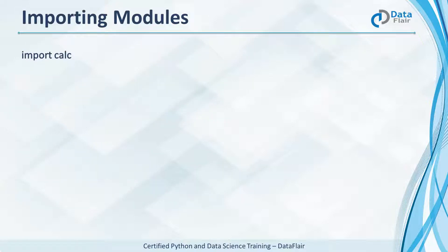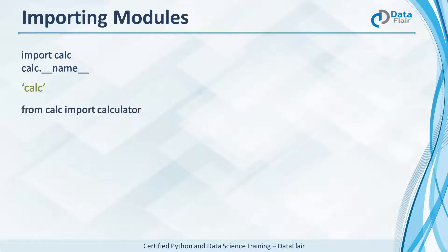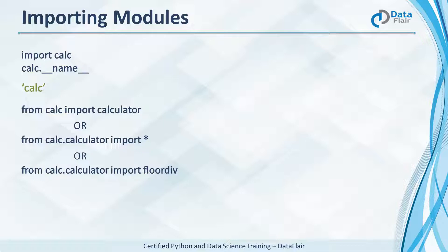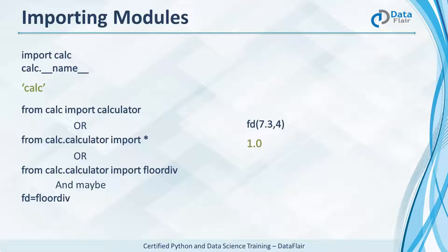When you're writing code and you need the module to do something for you, you can import it with the import keyword. Name gives us the name of the module. You can also import the calculator module from calc, or import everything from calculator which is in calc, or import just the function floorDiv from calculator. You can also give it an alias — floorDiv now also responds to fd. An fd of 7.3 and 4 floor divides 7.3 by 4 and returns 1.0.